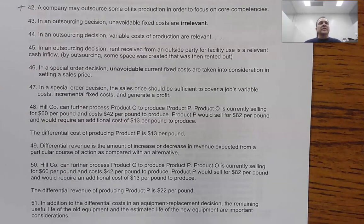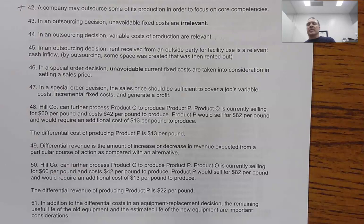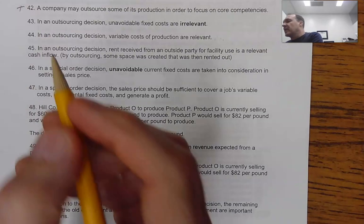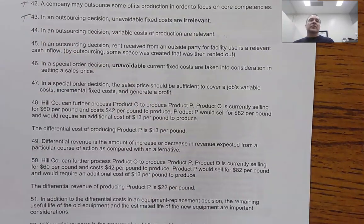Question 43 says: 'In an outsourcing decision, unavoidable fixed costs are irrelevant.' I don't care if it's an outsourcing decision or any other decision — unavoidable fixed costs are never relevant to future decisions. That's exactly what they said — they said it was irrelevant — so that makes it a true statement.